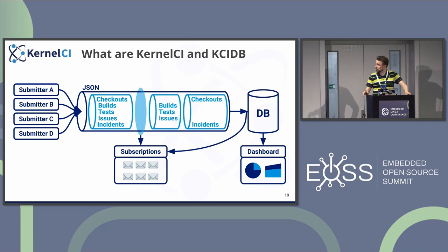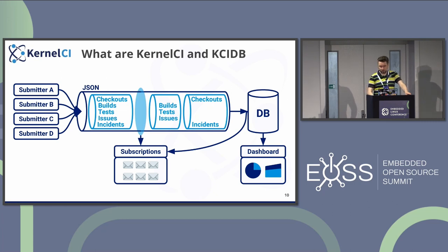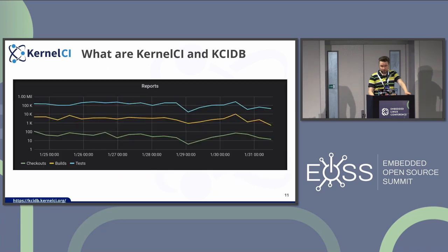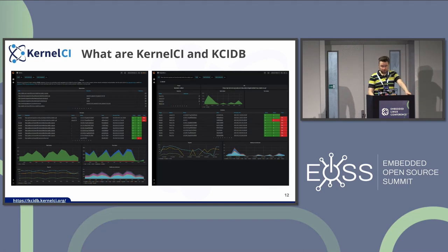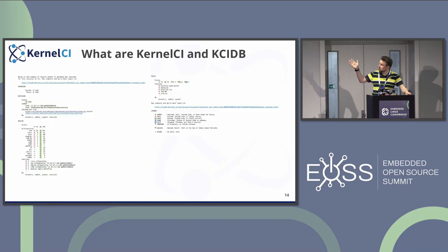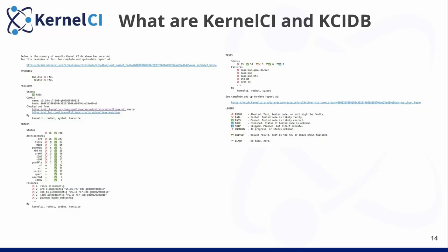Conceptually it's very simple: we just get some JSON from the submitters, put it into a database, display it on a dashboard, and we look at what's coming in — the changes — and we generate notifications about new results. We get about 300,000 test reports per day and maybe 10,000 builds for a bunch of revisions. The dashboard looks like this — it's a Grafana prototype. We have reports which are customizable. This one is aggregating results from four CI systems and displaying build results, test failures, and overall status, and gives you a link to see the full up-to-date results on the dashboard.